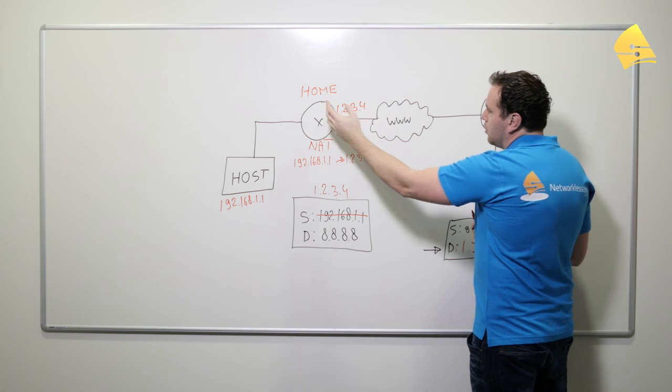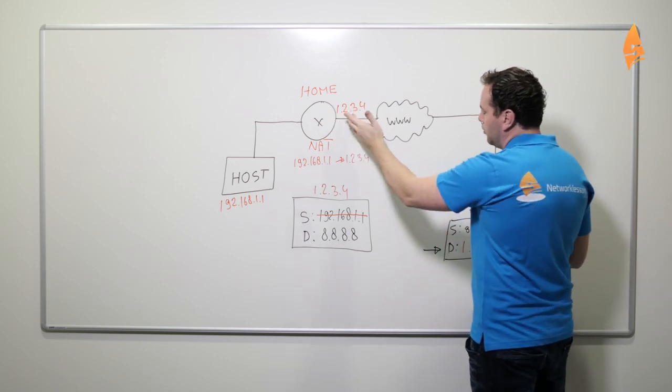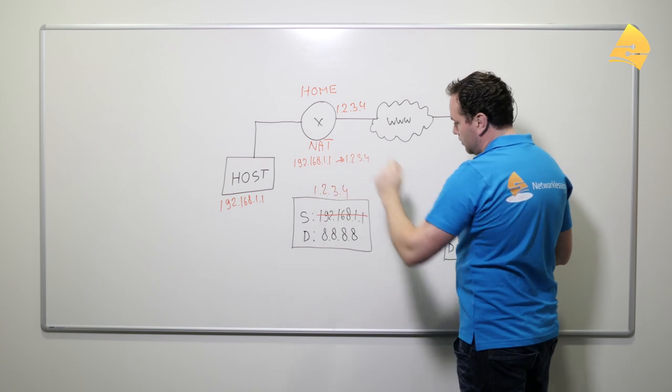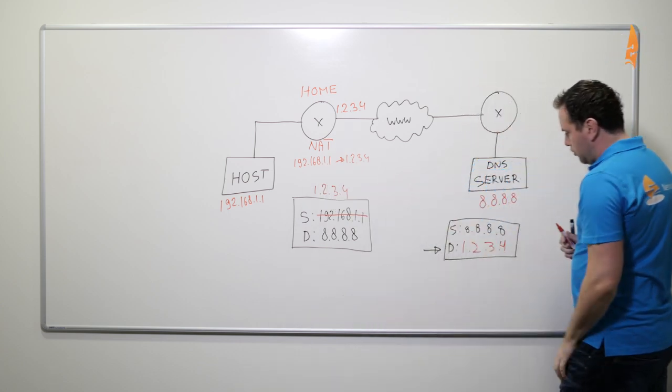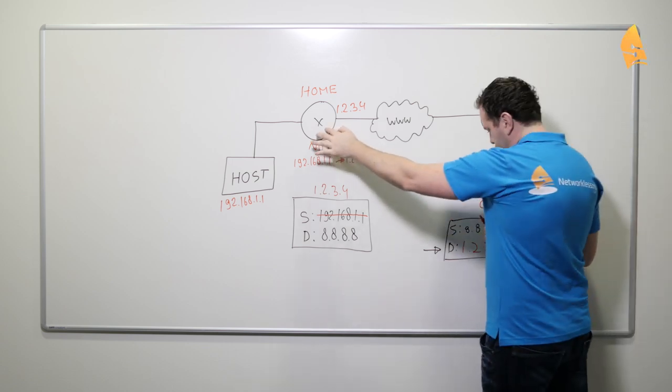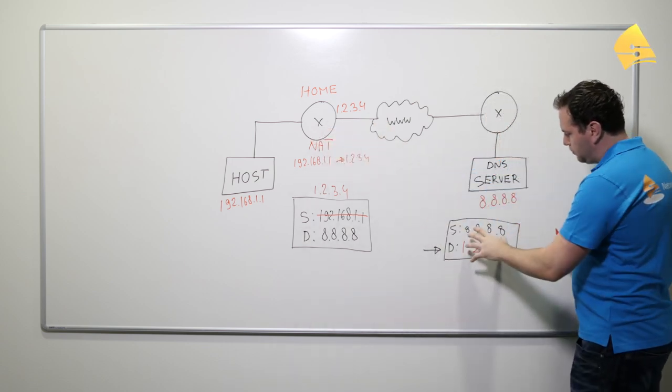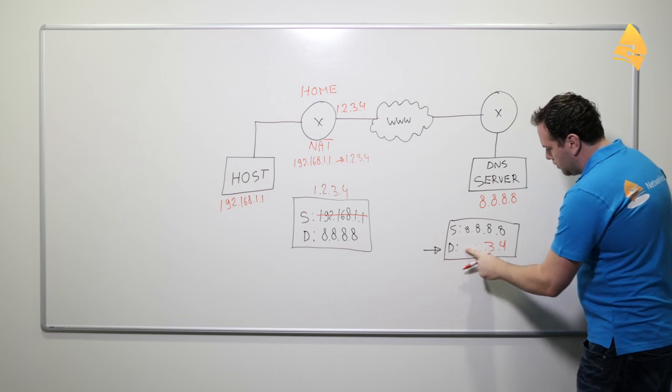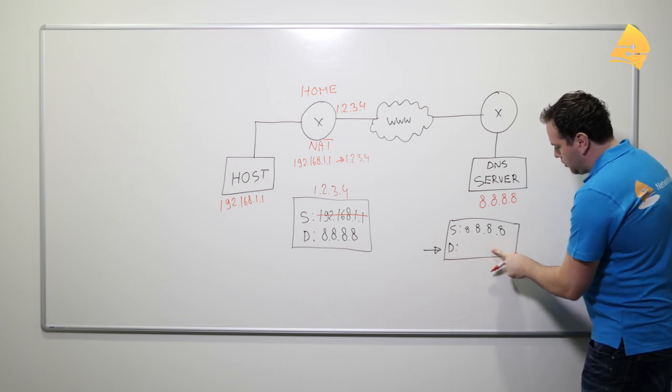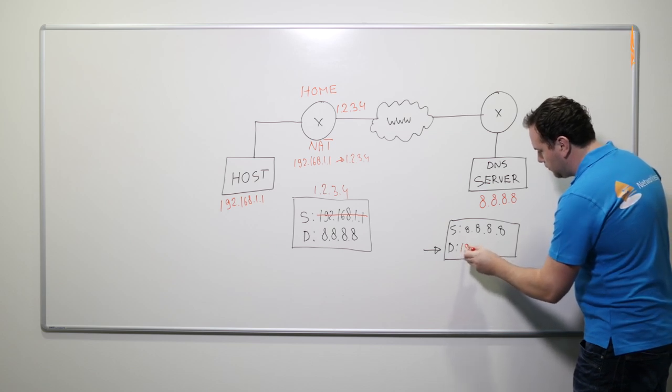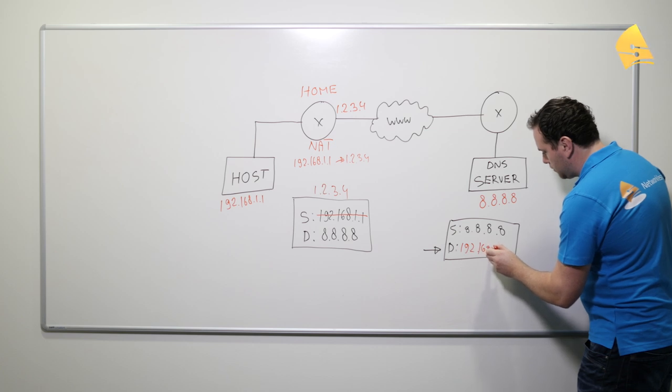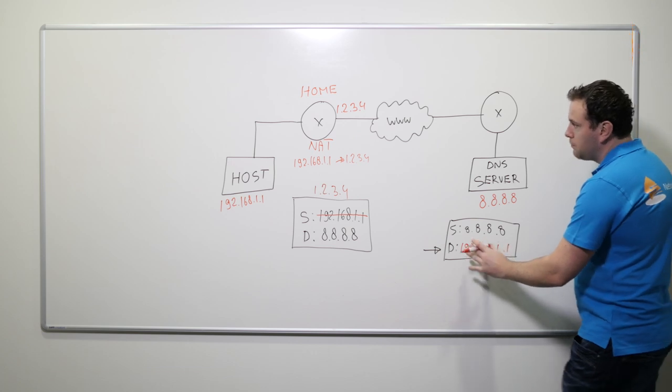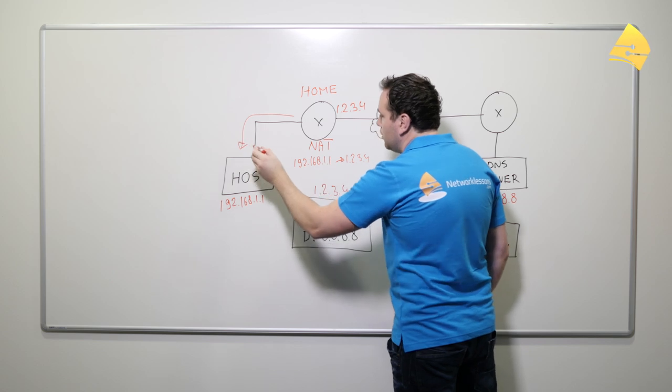And it will end up over here at our home router. Now what will this router do? It will translate the public IP back to the private IP address that we have. So the packet that it receives will have the IP address changed, and then it will be forwarded to the host.